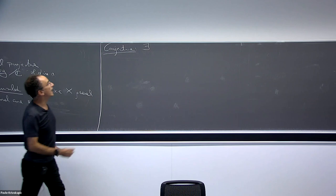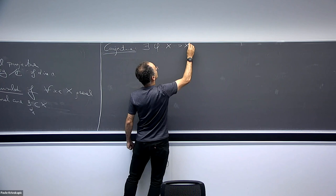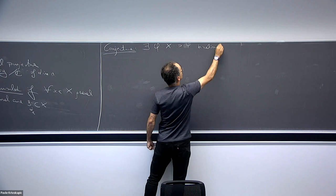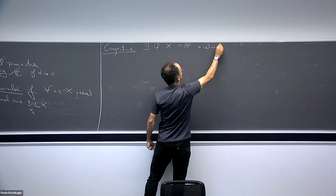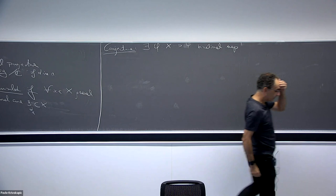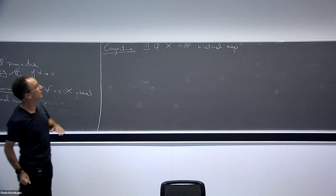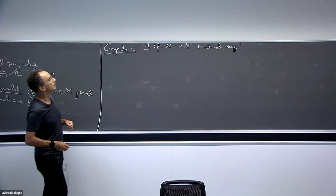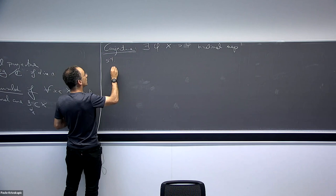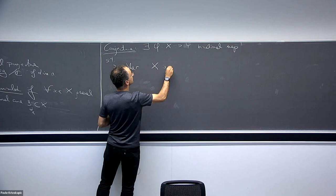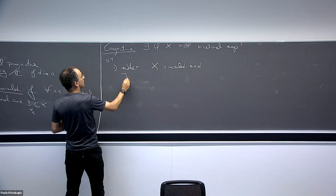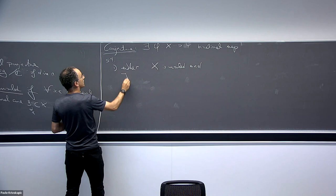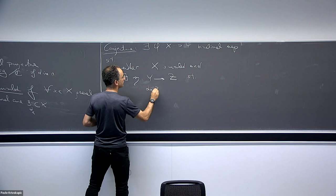What we expect is that there exists always a rational map — let me call the target Y — which is KX-negative. At the moment I'm not assuming anything about singularities; it can even extract divisors. We take it as an isomorphism over an open subset, such that either X is uniruled and there exists a map from Y to Z where the dimension of Z is strictly less than n.